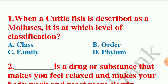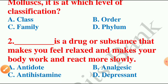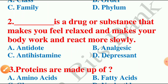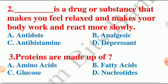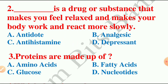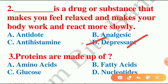Moving on to the next question: blank is a drug or substance that makes you feel relaxed and makes your body work and react more slowly. The options are antidote, analgesic, antihistamine, or depressant. The answer is option D — depressant. A depressant is a drug that makes you feel relaxed and makes your body work and react more slowly.